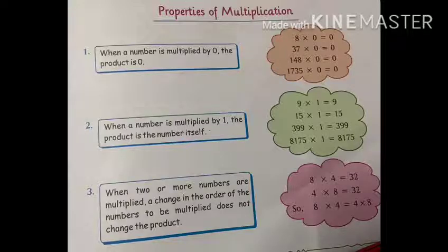The second property of multiplication tells us that if we multiply any number by 1, then the product will be the number itself.